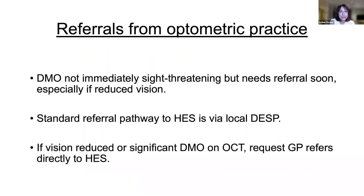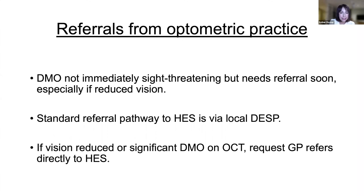Regarding referrals from optometric practice: it is not an immediately sight-threatening disease but does need timely referral, especially if vision is reduced. The standard referral pathway is via a local optometric referral pathway through GPs unless there's a direct avenue. For incidentally picked up mild exudates at the macula, local referral is appropriate. If vision is reduced or there's significant DMO with other retinopathy, direct referral to the hospital eye service is warranted. Early disease is very well managed through local diabetic screening programs with a clear audit trail.